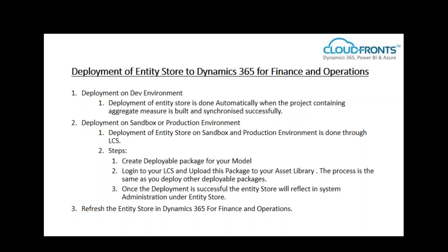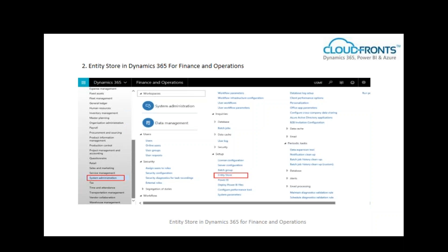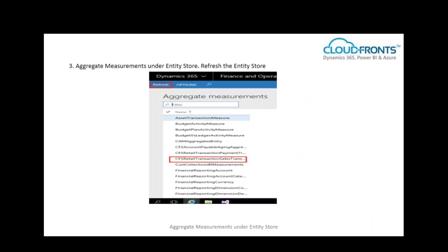Refresh the entity store in Dynamics 365 for Finance and Operations. This image depicts the creation of a deployable package for your model — under Dynamics 365, go to Deploy and select Create Deployable Package. The entity store will be visible under System Administration > Entity Store. When you click on Entity Store, the list of aggregate measures created will be listed. Click on the entity store you created and click the Refresh button on the top left.